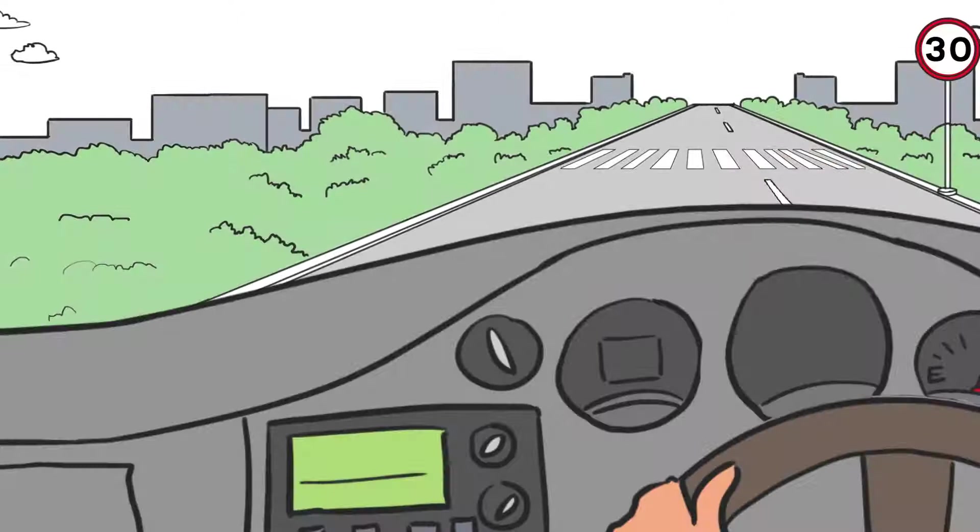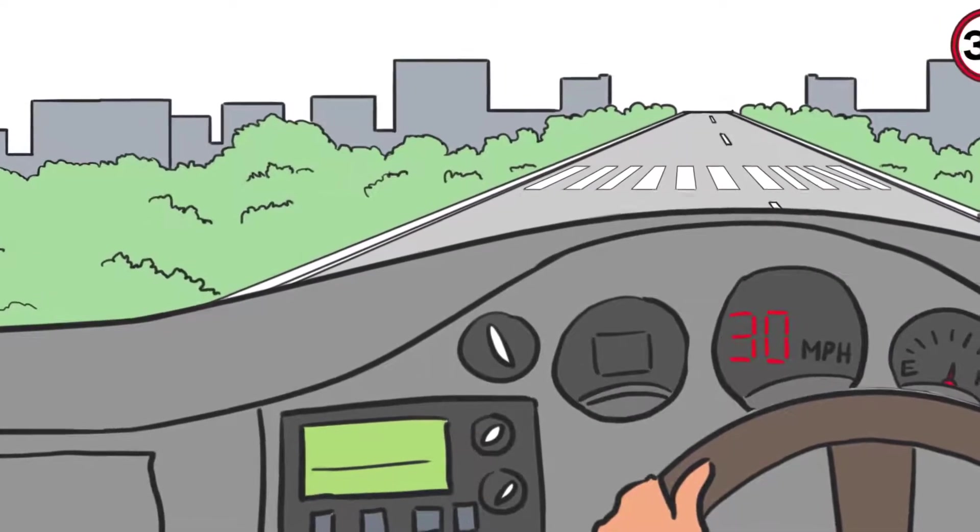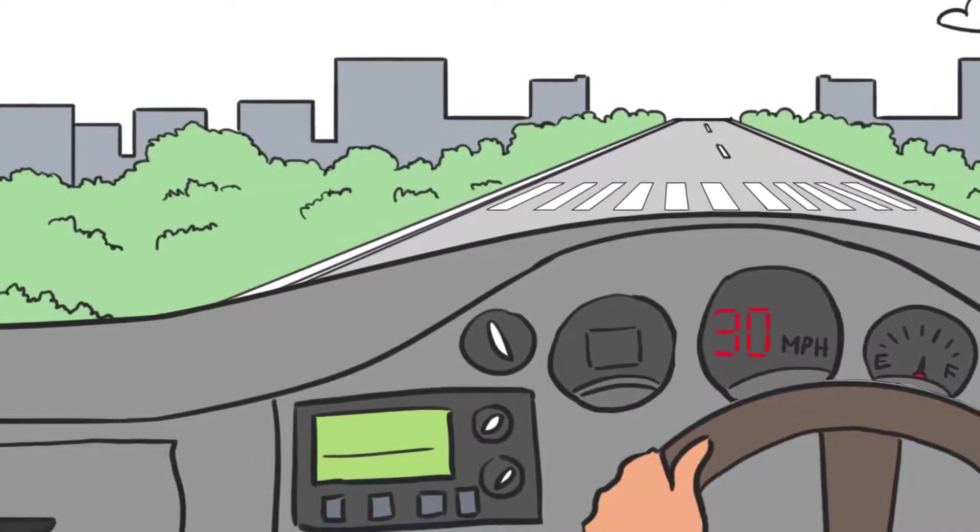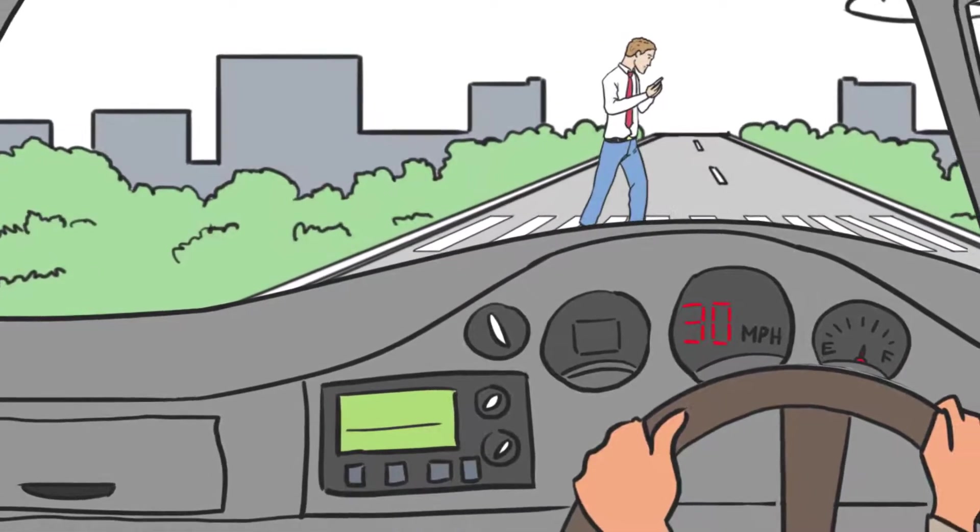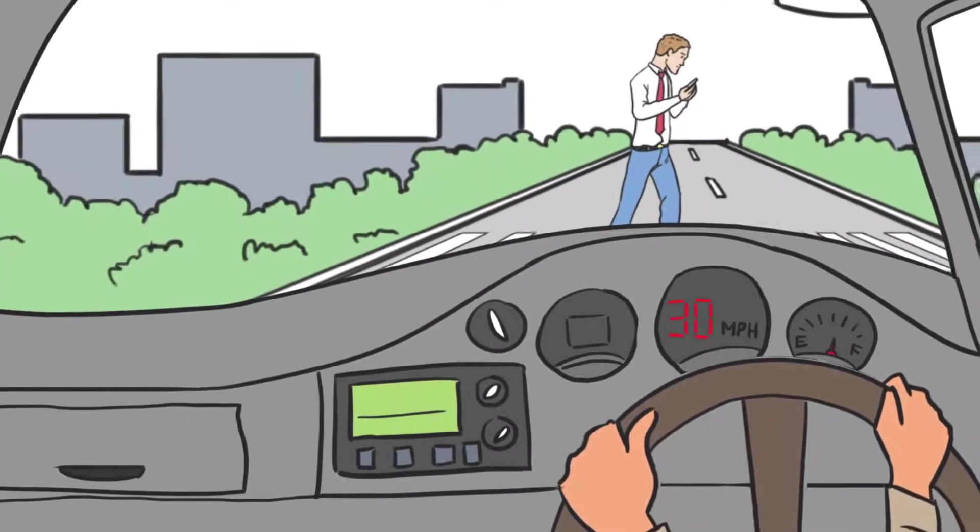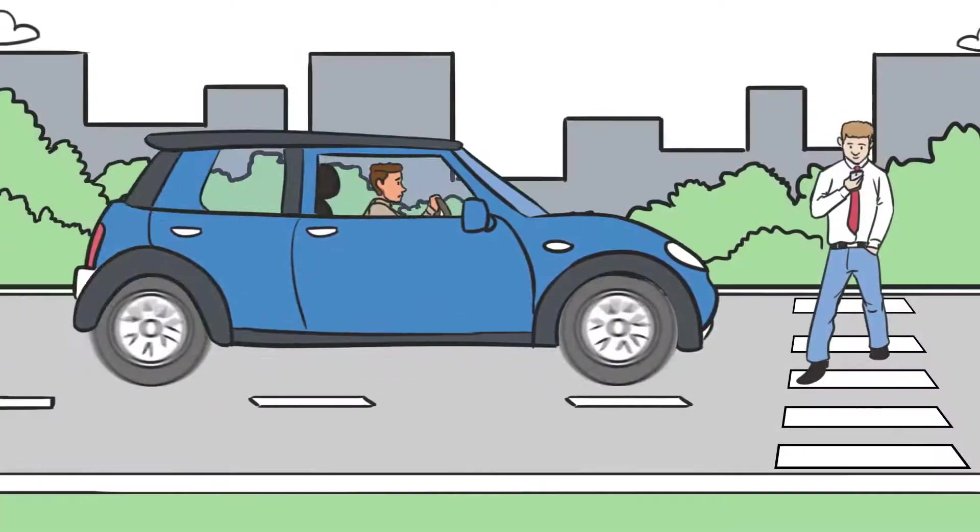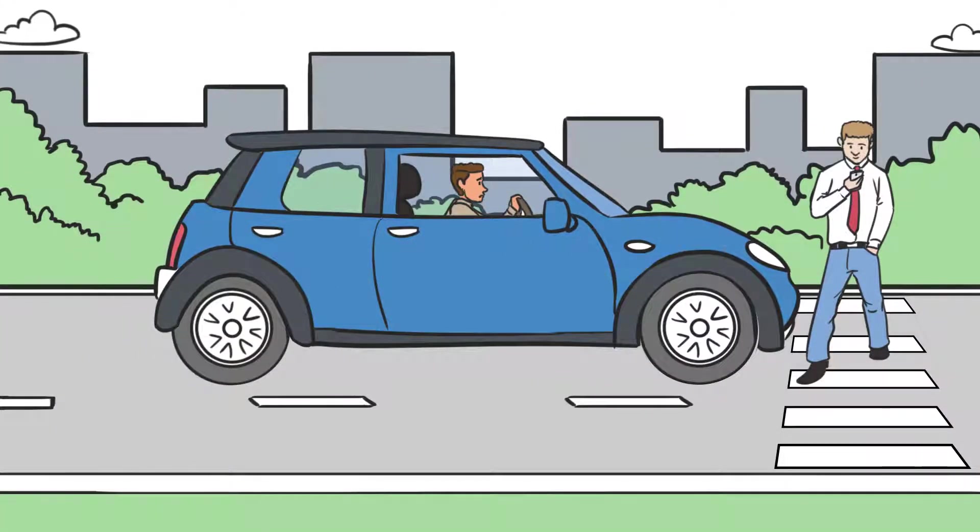Imagine this scenario. You are driving at a steady 30 miles per hour in a built-up area, when a pedestrian steps into the road a short distance ahead of you. You see the pedestrian and apply the brakes with maximum effort to perform an emergency stop. Thankfully, you avoid hitting them, but only just.